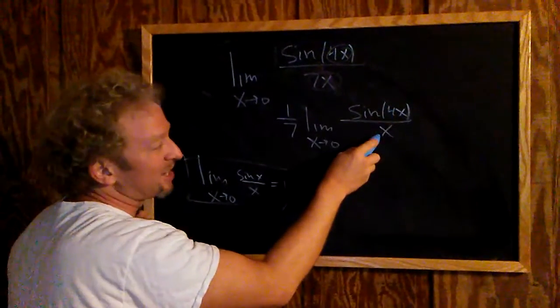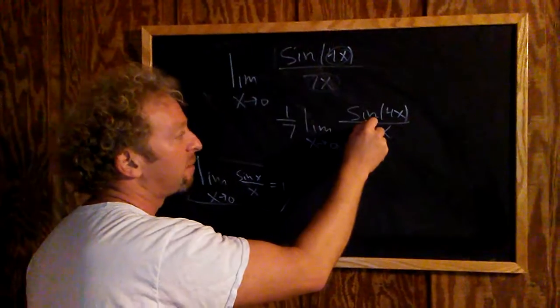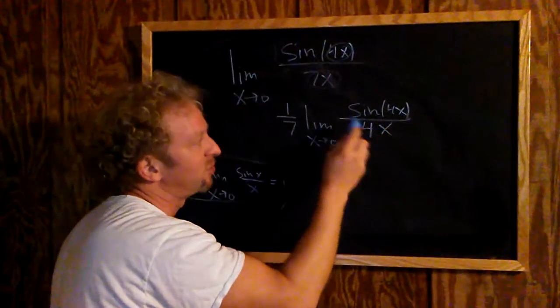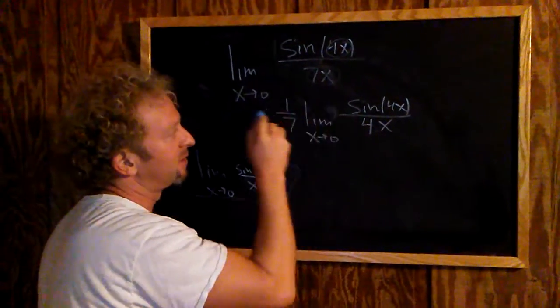Now this is 4x and this is x. We want to make this a 4, so we just put it there. But if we put it there, we've got to take it away, so instead I'll put it on the outside.